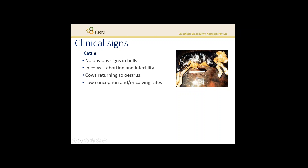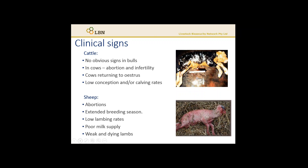Ovine Campylobacteriosis, also known as Vibriosis and epidemic abortion of sheep, causes epidemics of abortions, hence is aptly named. Susceptible ewes come in contact with the Campylobacter bacteria in contaminated feed or water. The bacteria enter the bloodstream and pass to the uterus, where they multiply and infect the placental membranes. Abortion then occurs one to three weeks after the infection.